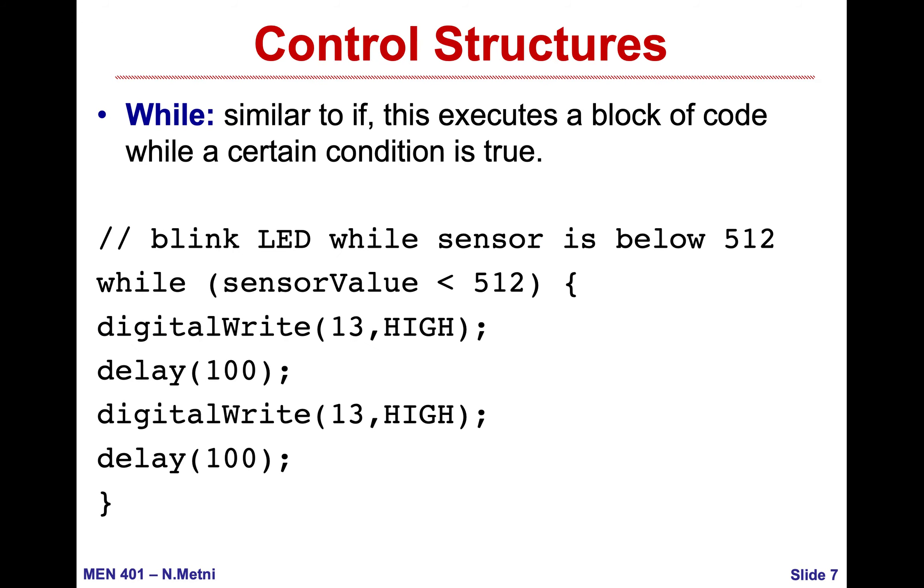While is similar to if but it is a continuous testing of a condition and continuous running of the code that is inside while. This code will stop running when this condition is not anymore verified. While sensor value is less than 512, if this condition is true, do this. Execute this instruction and then test if sensor value is still less than 512.